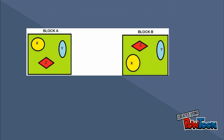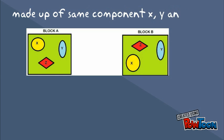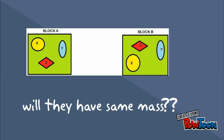Suppose we have two identical boxes A and B made up of same components X, Y, and Z. Will they have same mass? No. Shocking.